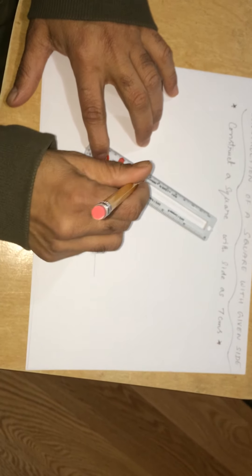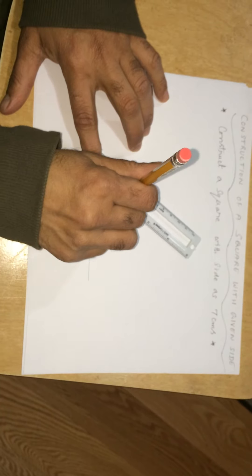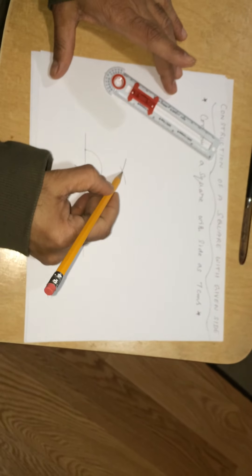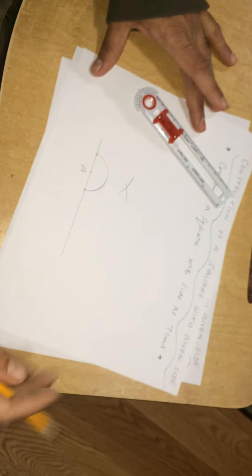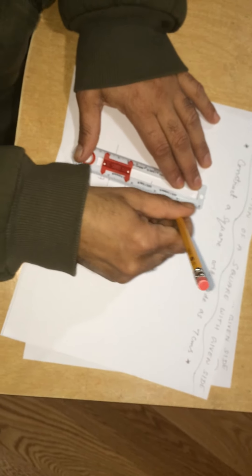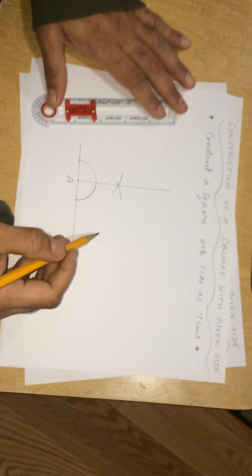Then, lifting this up and putting at this point, I draw one more arc with this second hole to cut the first one at this point. Now, I am joining A to this point of intersection. What I get here is a line segment perpendicular to this one.